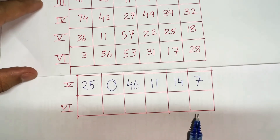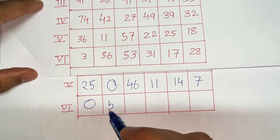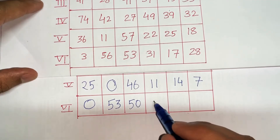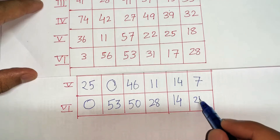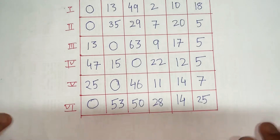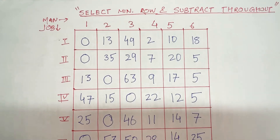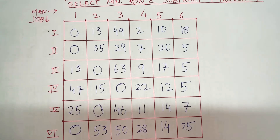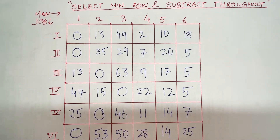Now let's do the last row. The minimum is 3: 3-3=0, 56-3=53, 53-3=50, 31-3=28, 17-3=14, and 28-3=25. So step 1 is complete — select the minimum of each row and subtract it throughout. You can redo the problem by pausing the video if you want.